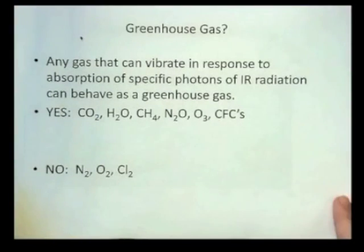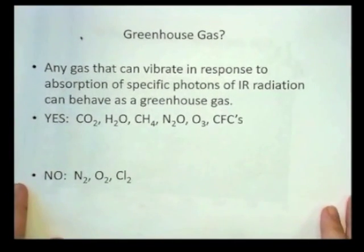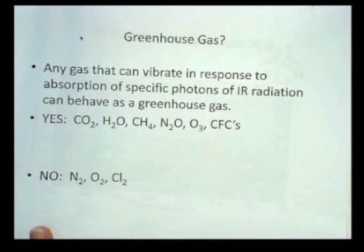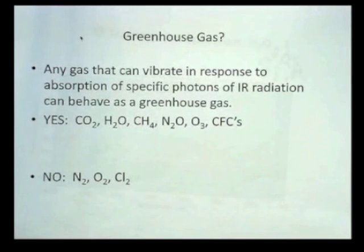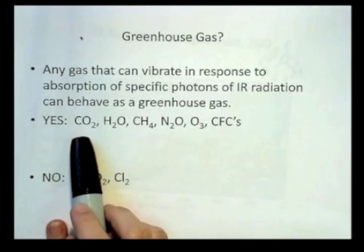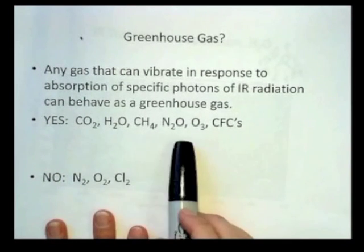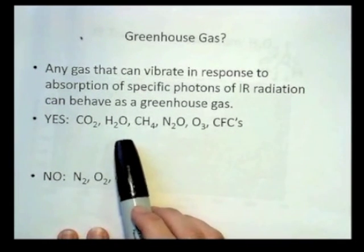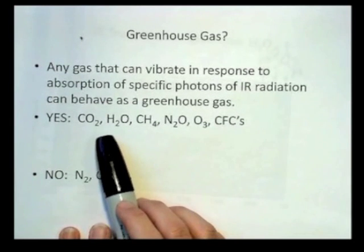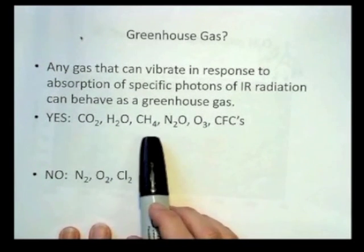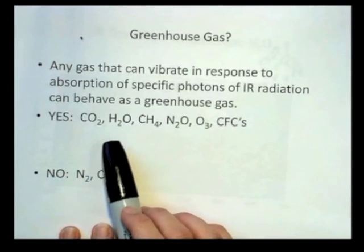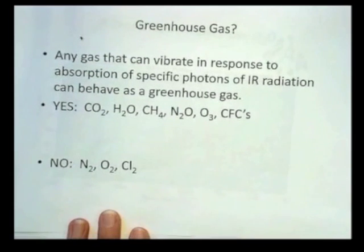So now I think we can answer what is a greenhouse gas? A greenhouse gas is any gas that can vibrate in response to the absorption of specific photons of infrared radiation. And so those that can do that, carbon dioxide we've already seen, water we've seen the spectrum, methane, nitrous oxide, ozone, and the CFCs. They're all molecules that have more than two atoms, so they are capable of bending and stretching. And because there's more than two atoms, the stretches can be asymmetric.